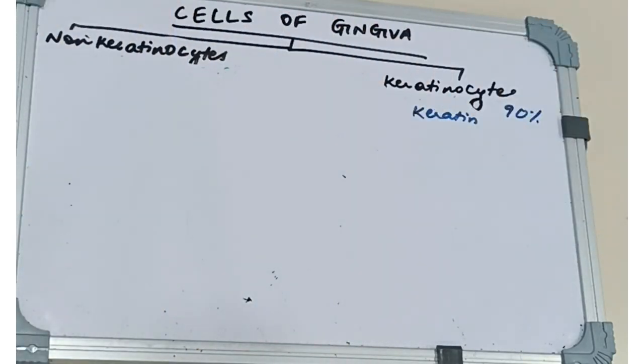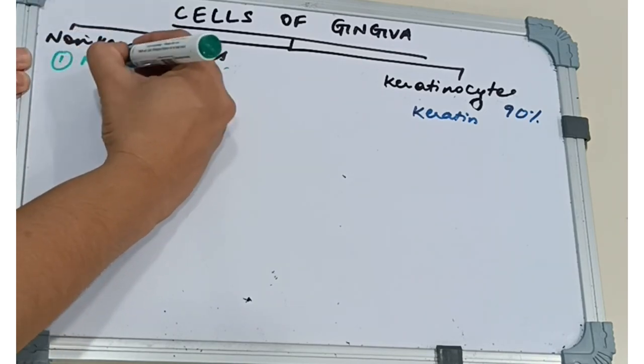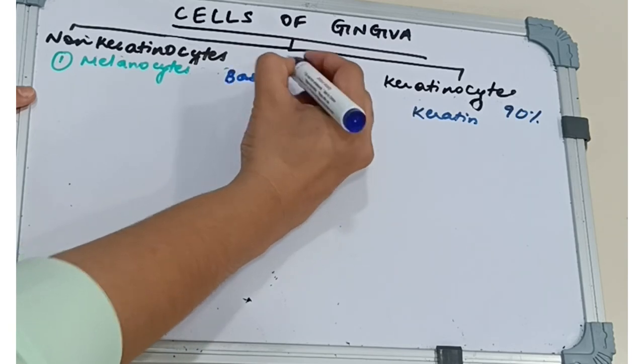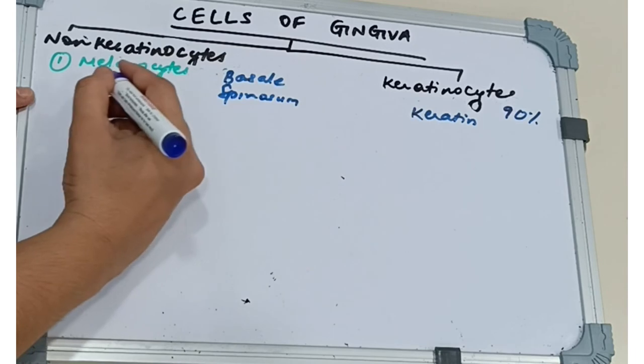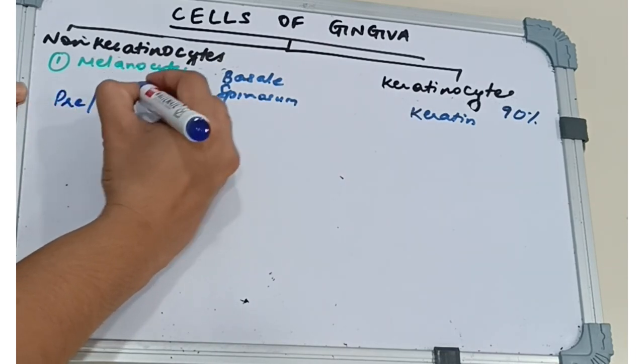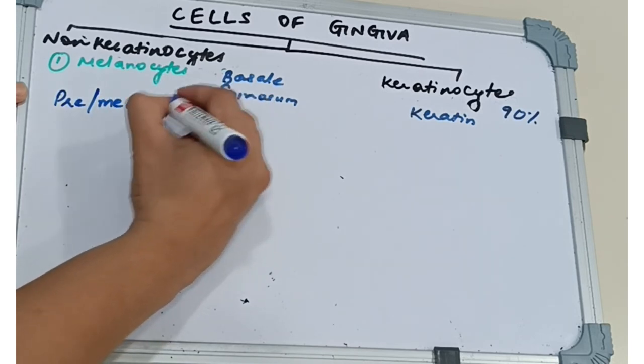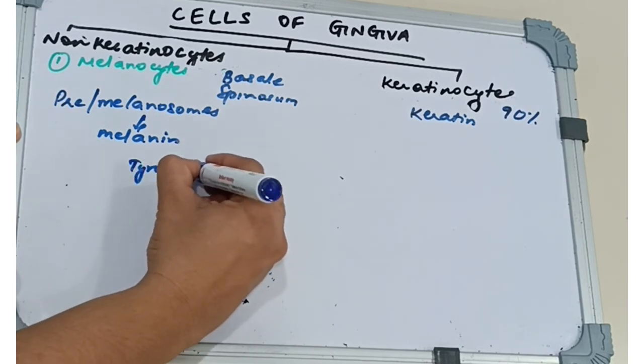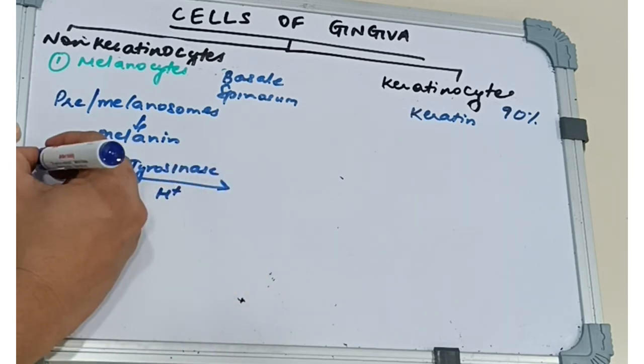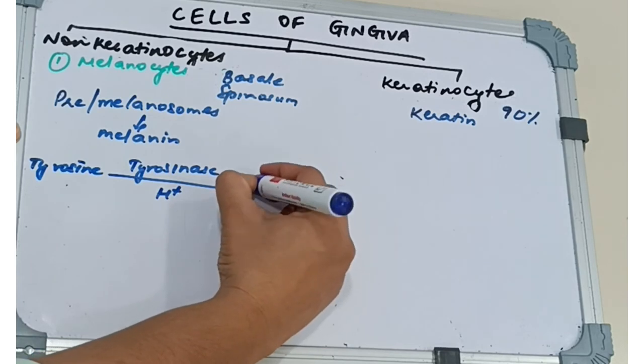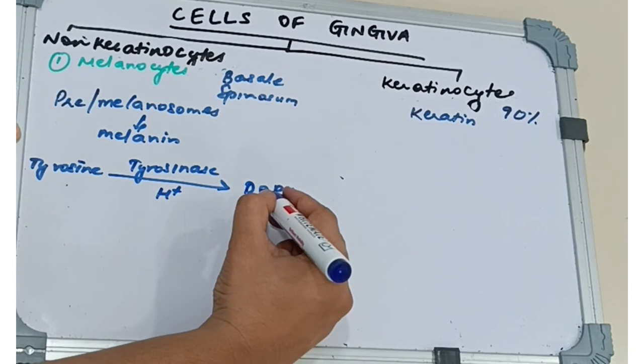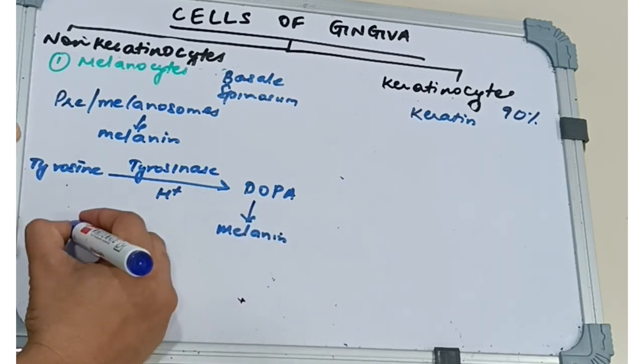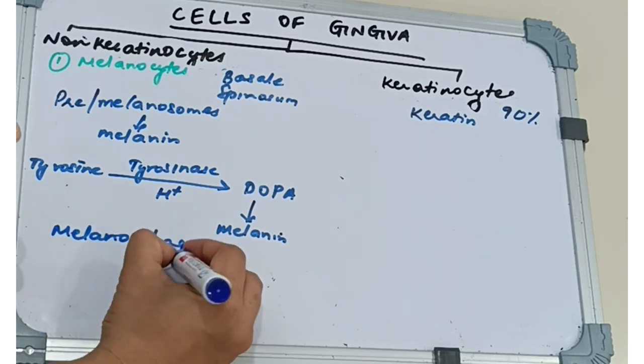Coming to non-keratinocytes, we first have the melanocytes. These melanocytes originate from the neural crest cells and are present in basal layer and spinosum. They contain organelles called premelanosomes which later form melanosomes responsible for melanin synthesis. These contain the tyrosinase enzyme, which is responsible for the hydroxylation of tyrosine to DOPA or dihydroxyphenylalanine. This in turn is progressively converted to melanin. The melanin granules are phagocytosed by melanophages or melanophores.